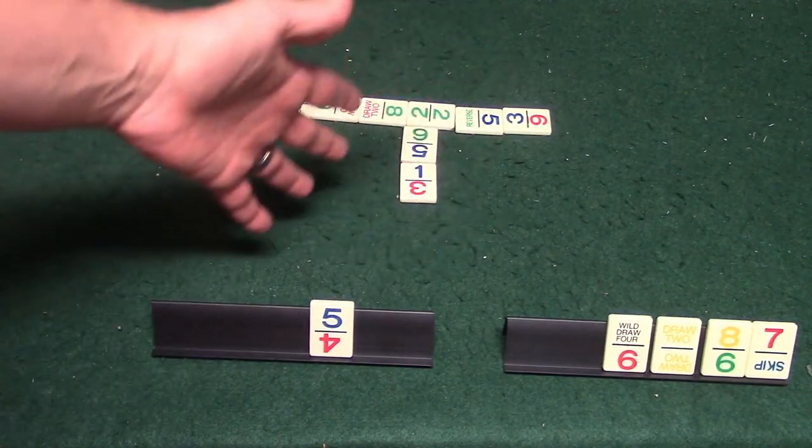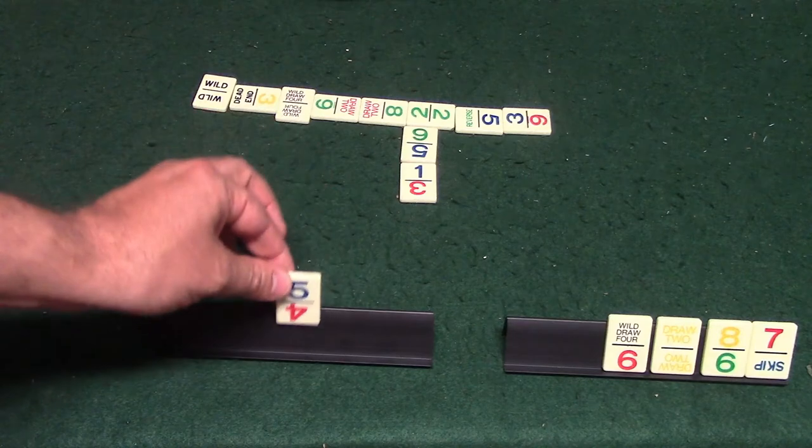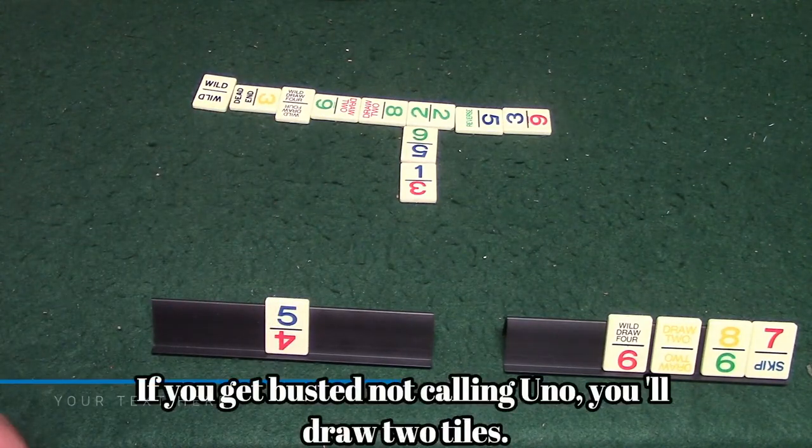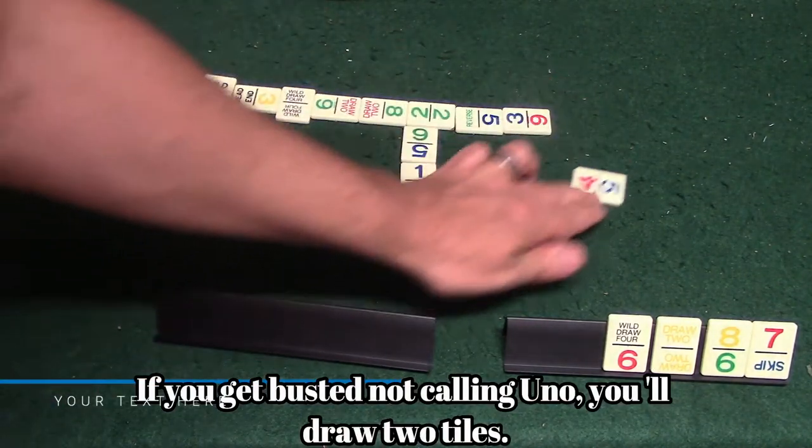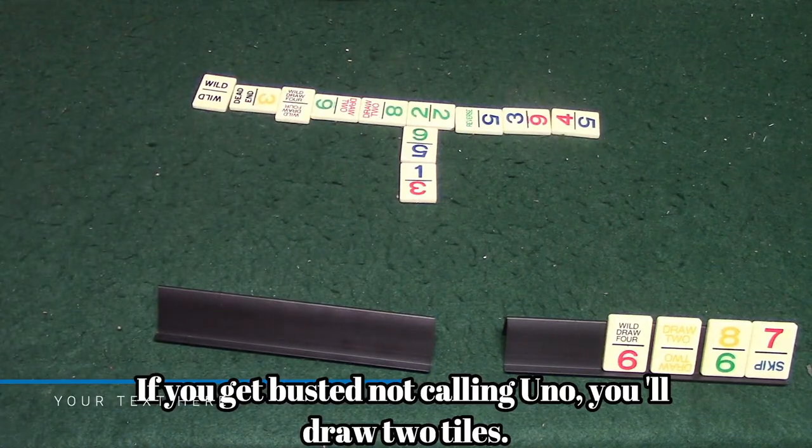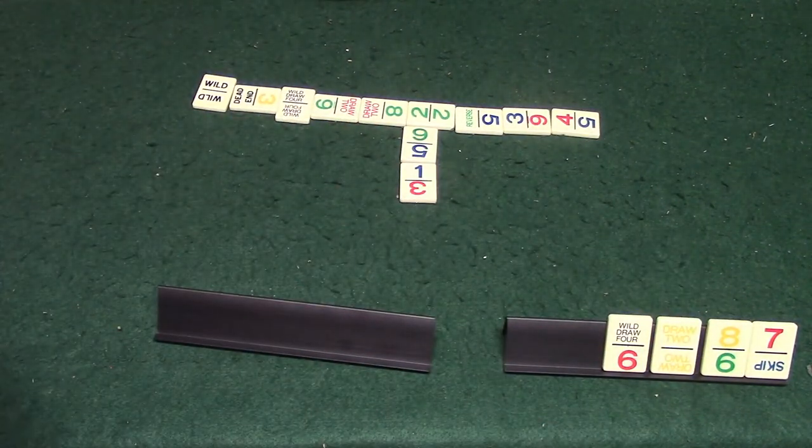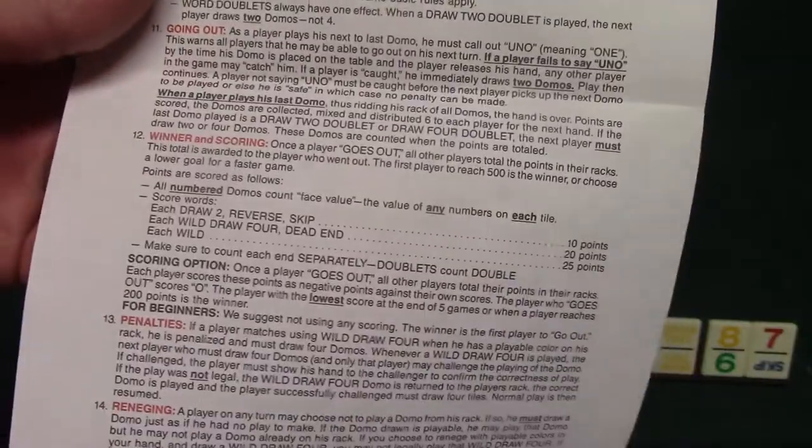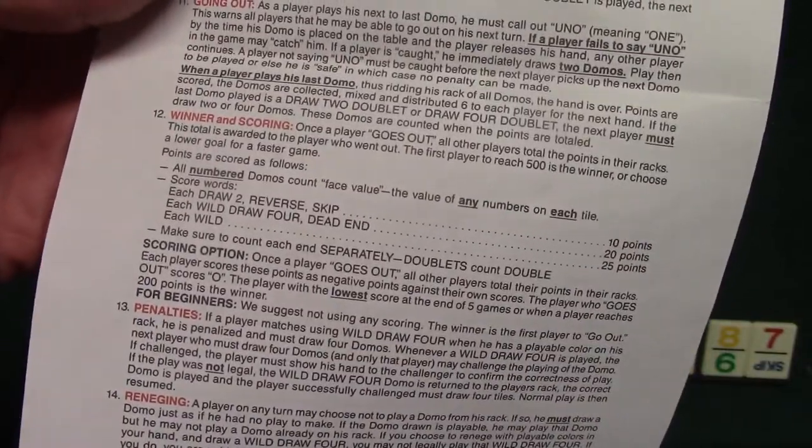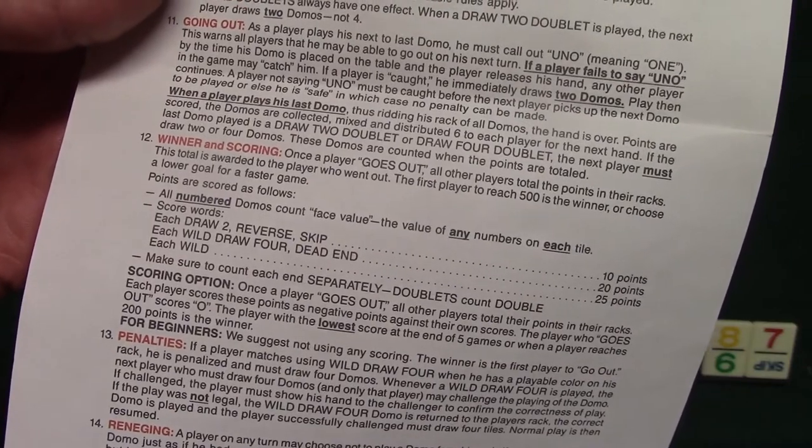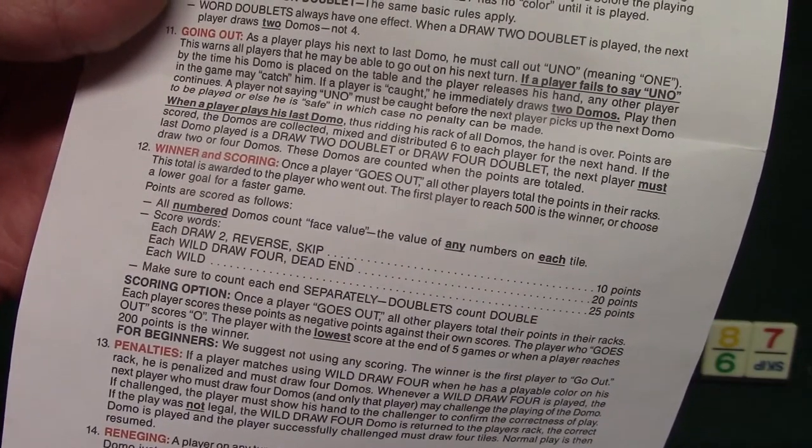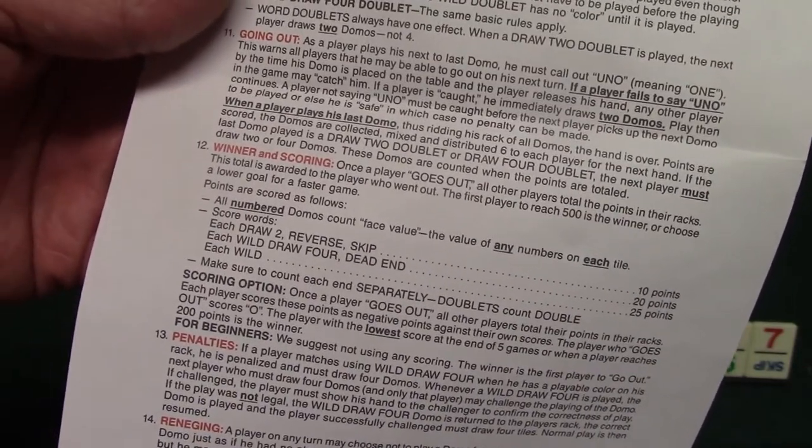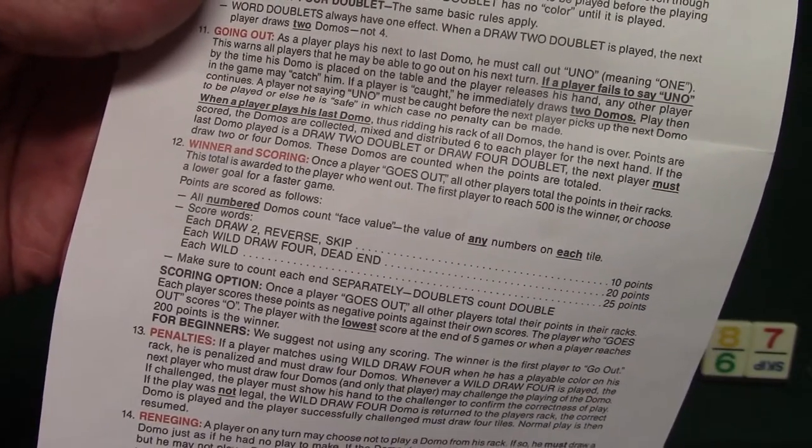But anyway, after you get to this point and someone gets down to one tile they will call uno, and let's just say this guy goes out on his next turn and that will end the round. So now what this guy is going to do is he's going to go ahead and count up his points. Anyway you'll just basically count up the point values and the first person to get to 500 points is going to lose the game. Once someone reaches 500, everybody else will look at their score and whoever has the lowest score will win the game. And that ladies and gentlemen is uno dominoes.